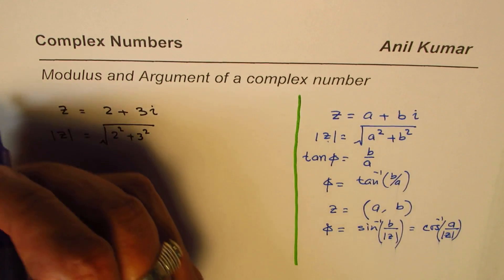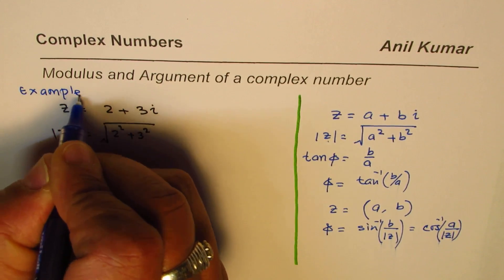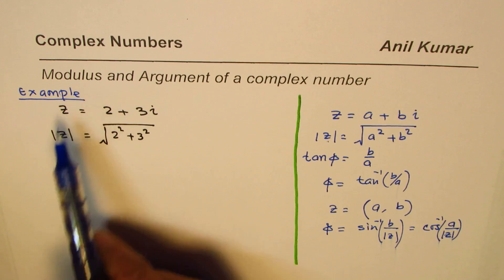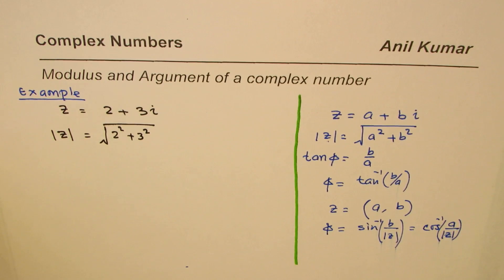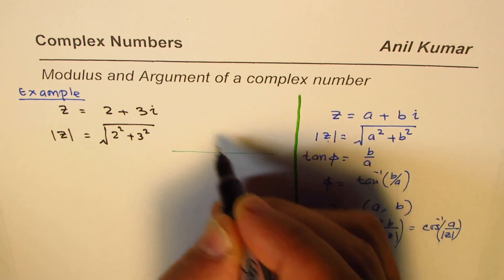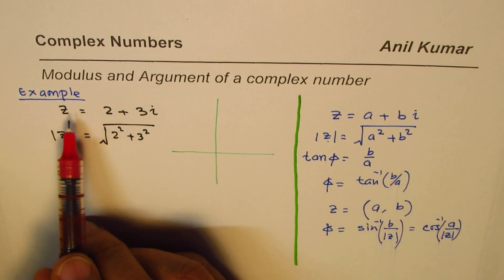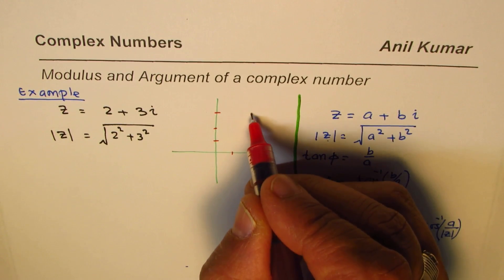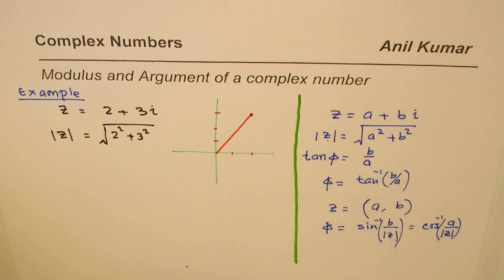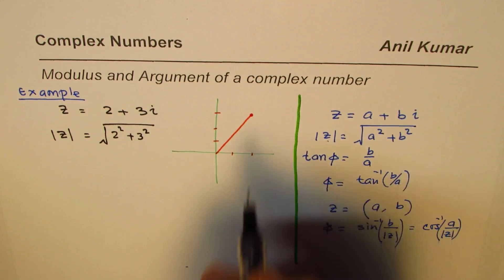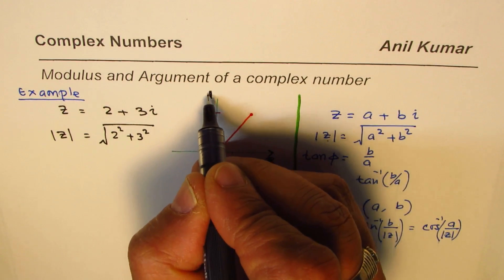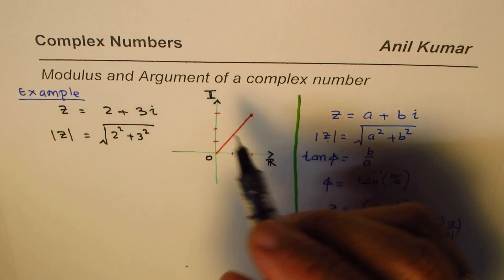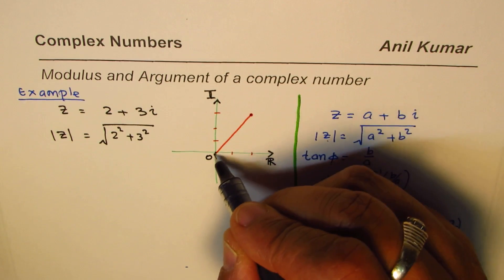Let's get back to our example: the complex number z equals 2 plus 3i. We need to find its modulus and argument. Let's also represent it on the complex plane. The real part is 2 along the horizontal axis and the imaginary part is 3 along the vertical axis, so that point represents our complex number z.